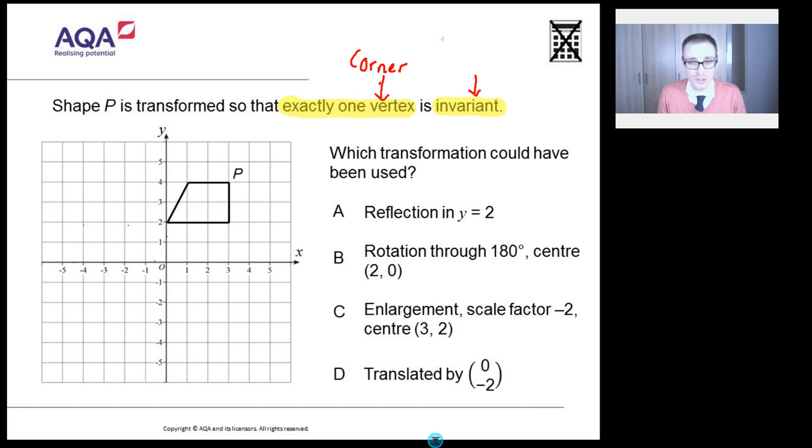Well invariant, brand new to GCSE, I think of it as meaning stays the same. So does not move. If something's invariant, it stays in the exact same position. It's stubborn. It's refusing to budge. So this question essentially says, shape P is transformed so that exactly one corner stays in the same place. All right, so now we know that, let's see if we can actually do it.